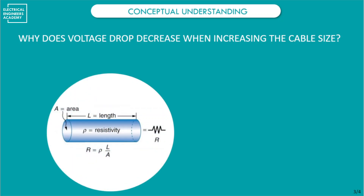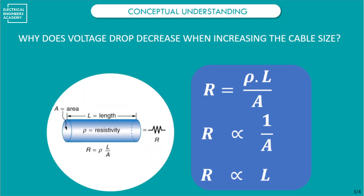To understand this, let's look at the relation between resistance, cable length, and cable diameter. From the basic formula, the resistance of a cable will increase when the cable length increases, and will decrease when the cross-sectional area increases. Resistance is inversely proportional to the cross-sectional area and directly proportional to the cable length.